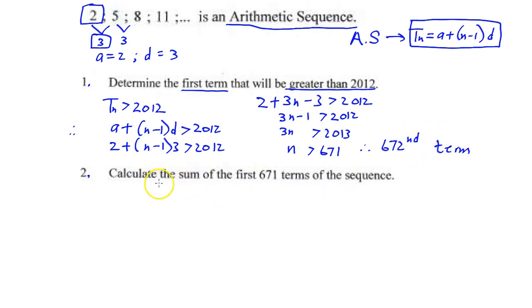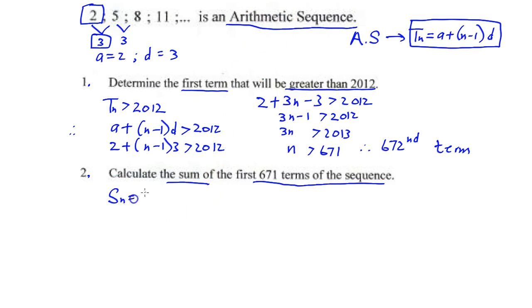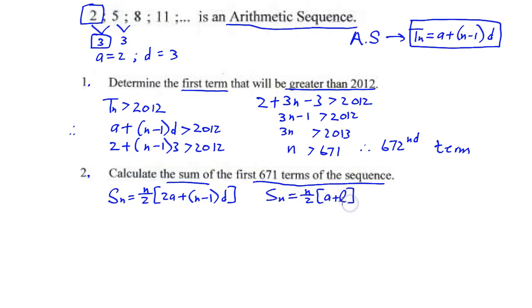The next question says: calculate the sum of the first 671 terms of the sequence. For the sum to n terms of an arithmetic sequence there are two formulas: Sₙ = n/2 × (2a + (n−1)d), and also Sₙ = n/2 × (a + l), where l is the last term. If we know the last term, we can use the second formula.